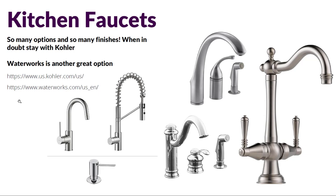Thinking about kitchen plumbing, first we think about faucets — there are so many options with so many finishes it seems like an endless amount. When in doubt, go with Kohler, another fantastic Wisconsin company made near Sheboygan in Kohler, Wisconsin. They make fantastic high-end products and a wonderful array of kitchen faucets in a vast configuration of sizes, finishes, shapes, and forms. Waterworks is another great option for beautiful high-end faucets.